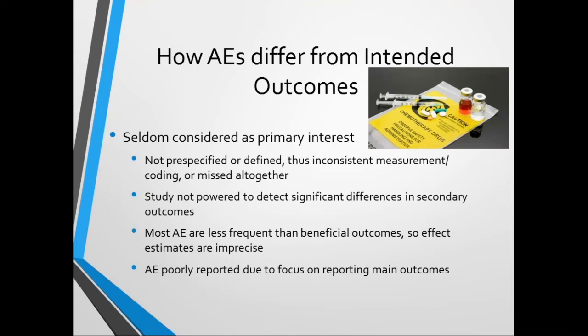One of the key aspects in assessing adverse effects is that they are seldom considered pre-specified. They may not be well defined, so often they're not a primary outcome or even a secondary outcome. What happens is that there's inconsistent measurement, they're decoded poorly, or they might be missed altogether in the research study, because investigators were not completely sure what they were measuring, and they may only be picked up by chance.